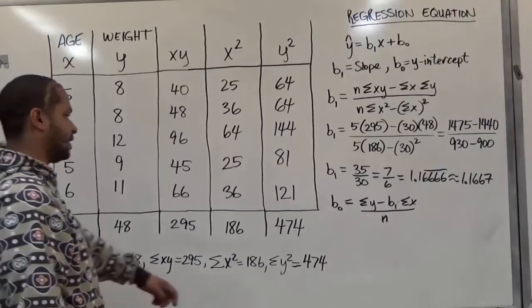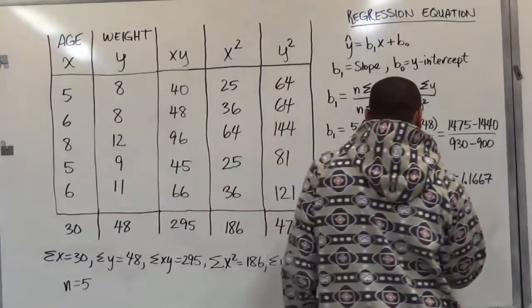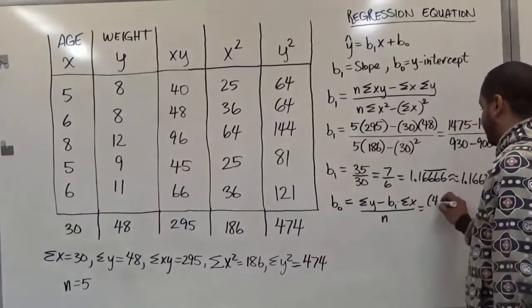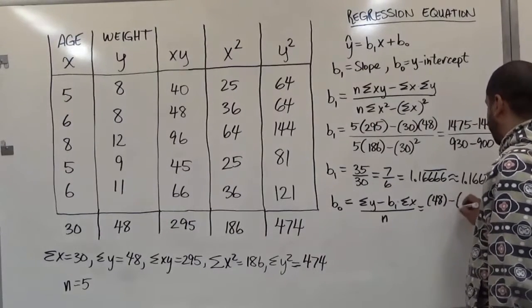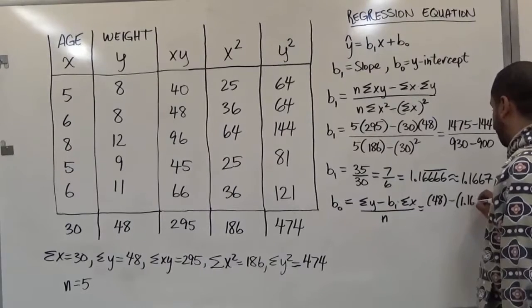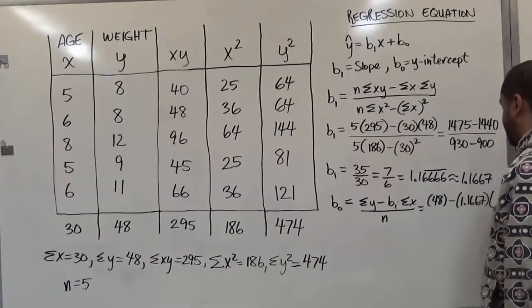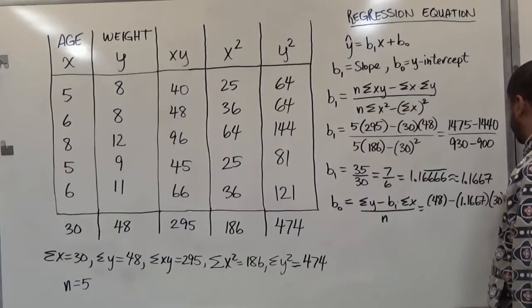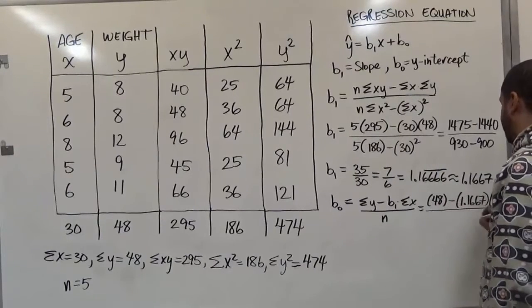This is actually just a very short formula and really easy to calculate as well. We'll take into account the sum of x, the sum of y, the value of n, and these are the only three we need in combination with the b1. So here we're going to have just 48, take away the slope value once it's rounded up, 1.1667, and this is going to be multiplied by 30. And everything here is going to be divided by 5.